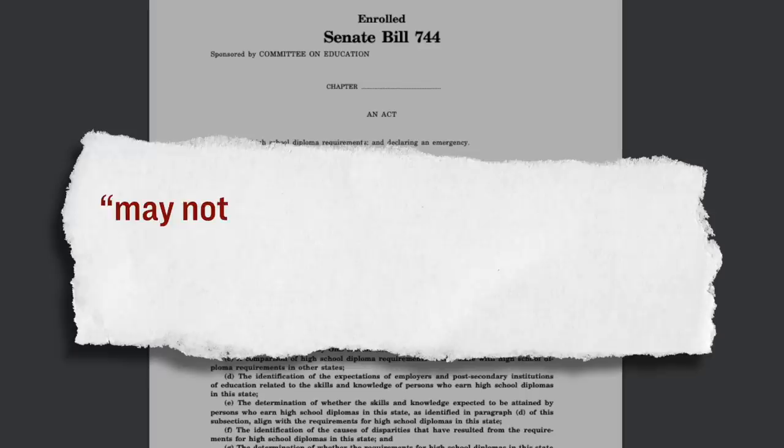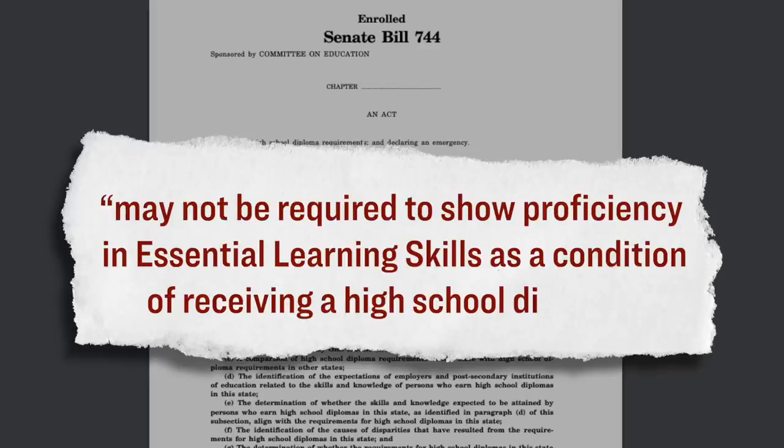Just two days ago, it was announced that the governor of Oregon signed a new bill into law, which will allow high school students to graduate without proving that they can read, write, or do math. This bill, which is officially called Senate Bill 744, says students may not be required to show proficiency in essential learning skills as a condition of receiving a high school diploma over the next three school years.